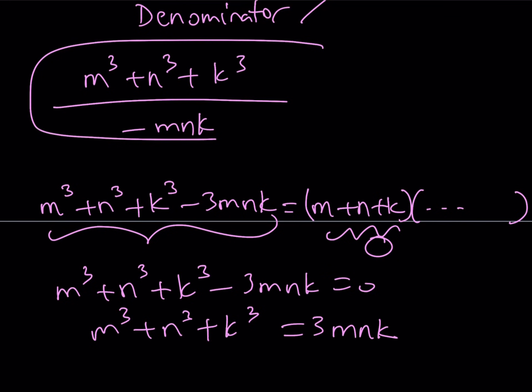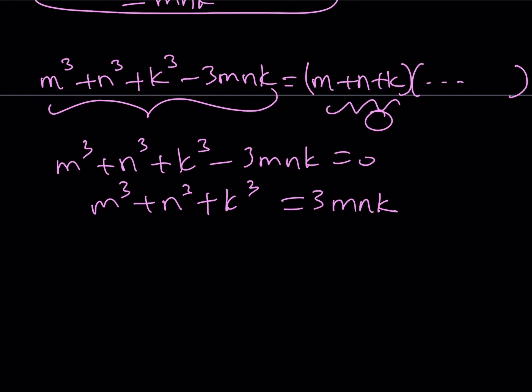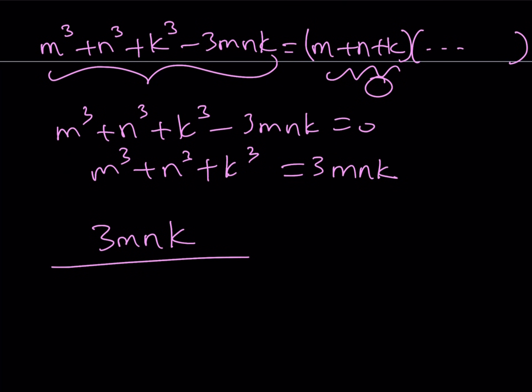Now, in this expression, notice that we have the sum of the cubes in the numerator. So we can replace it with 3MNK. And the bottom is negative MNK. And they cancel out. And the 3 doesn't. And the answer is going to become negative 3.